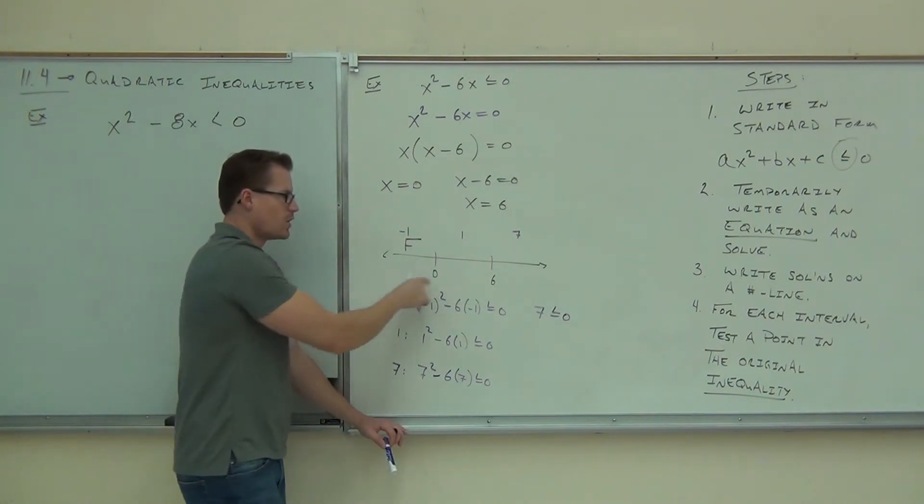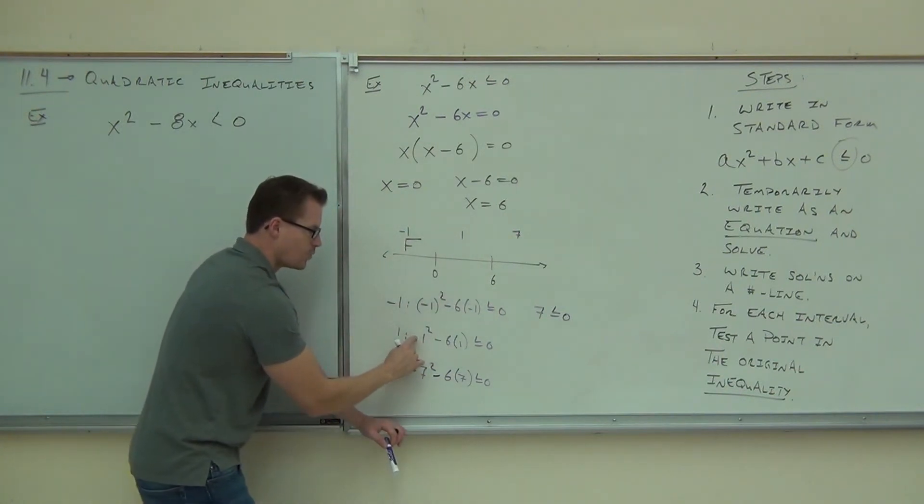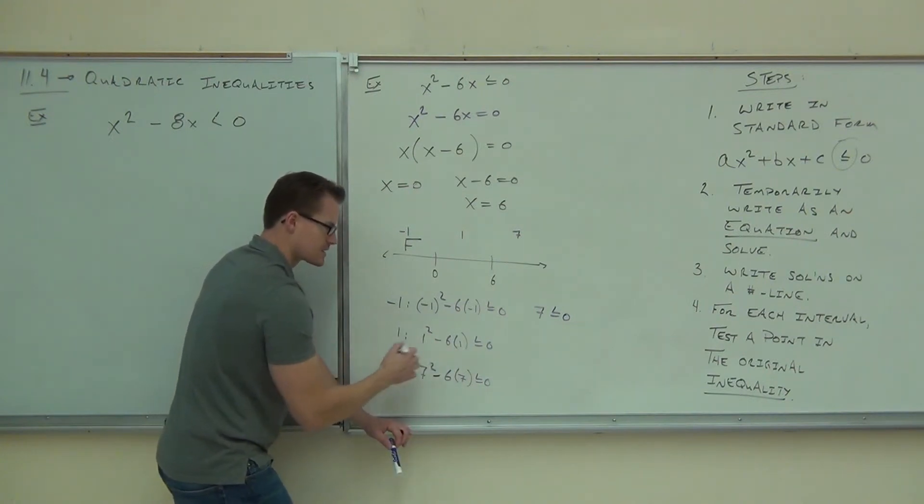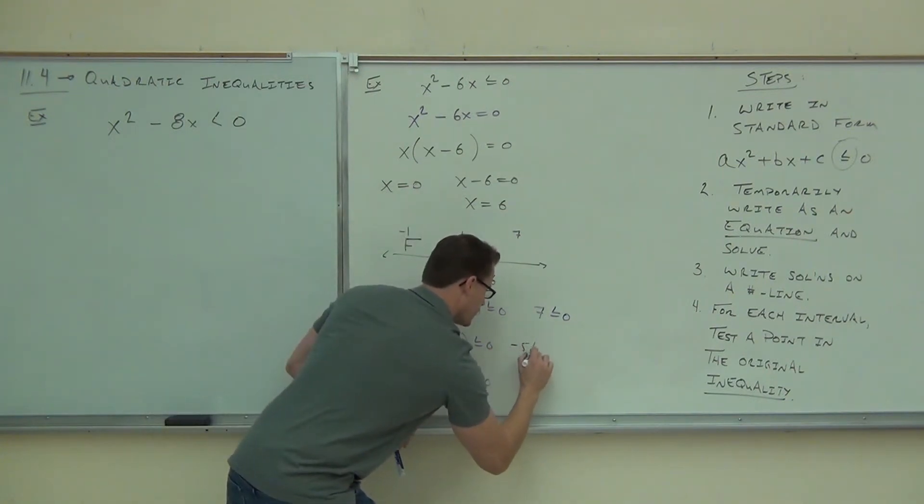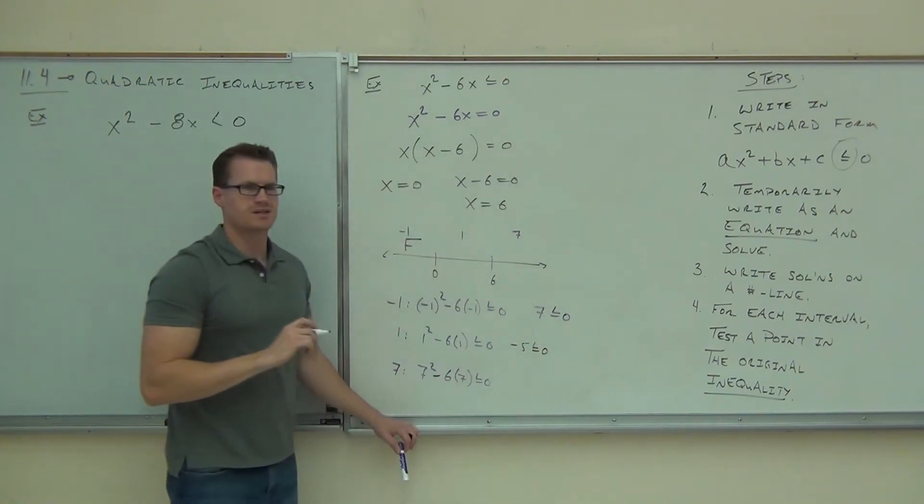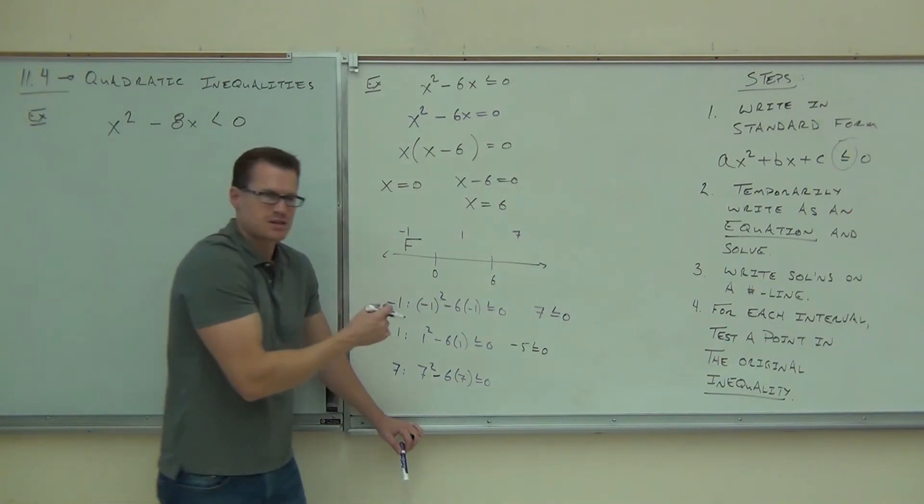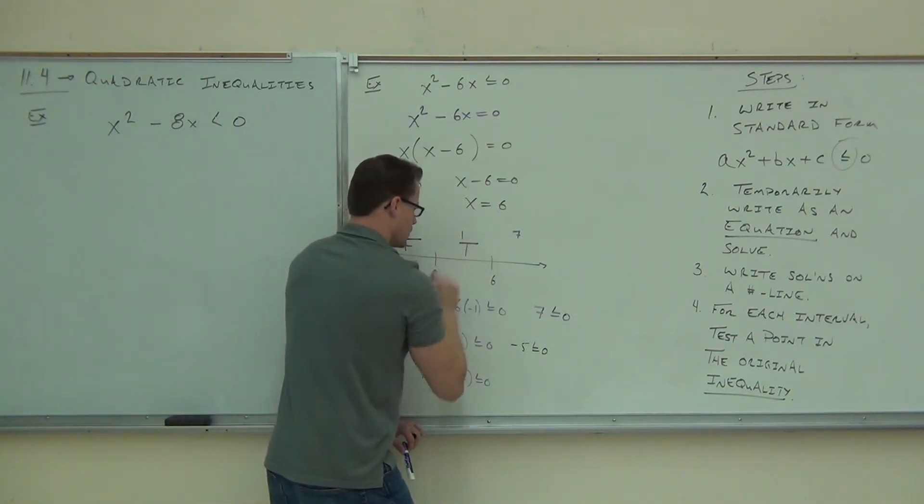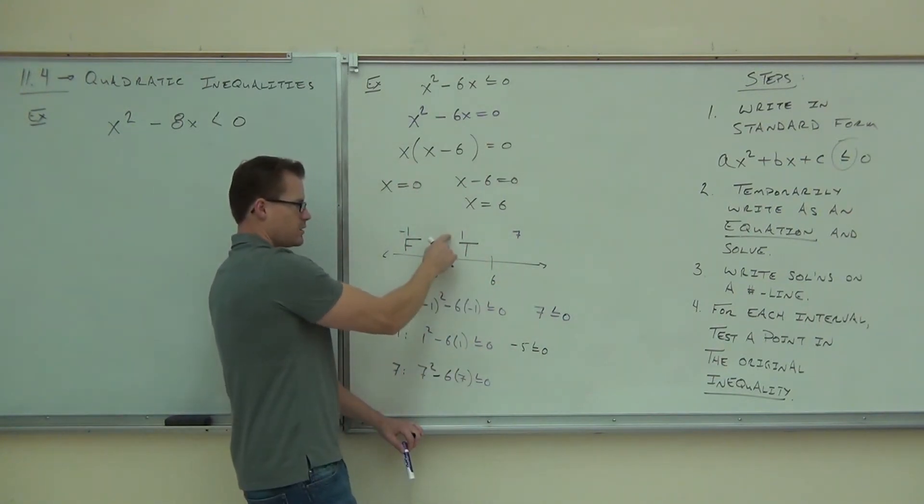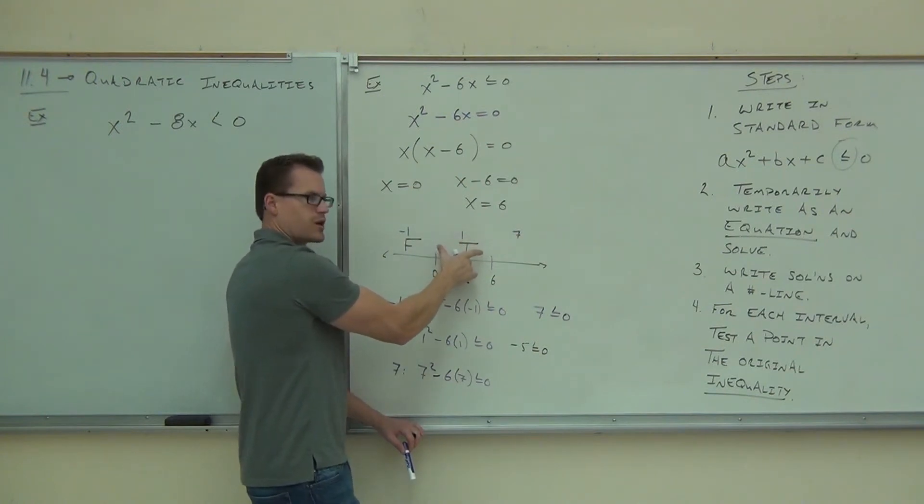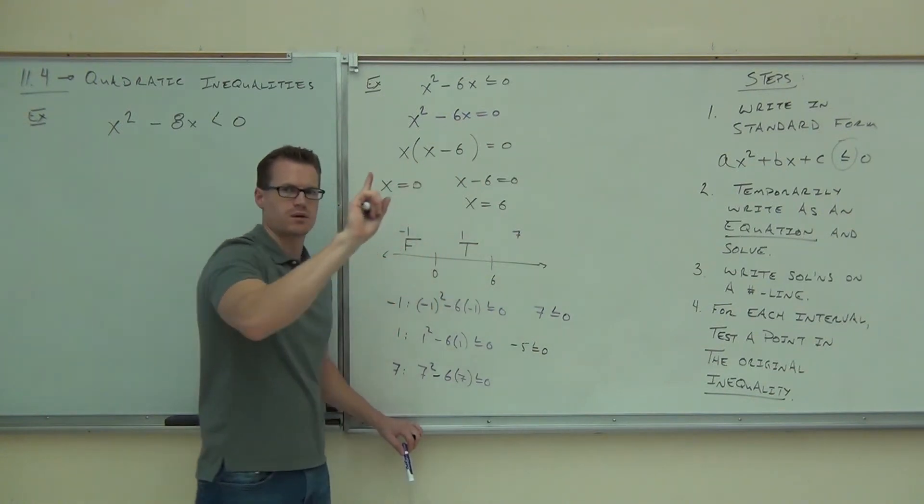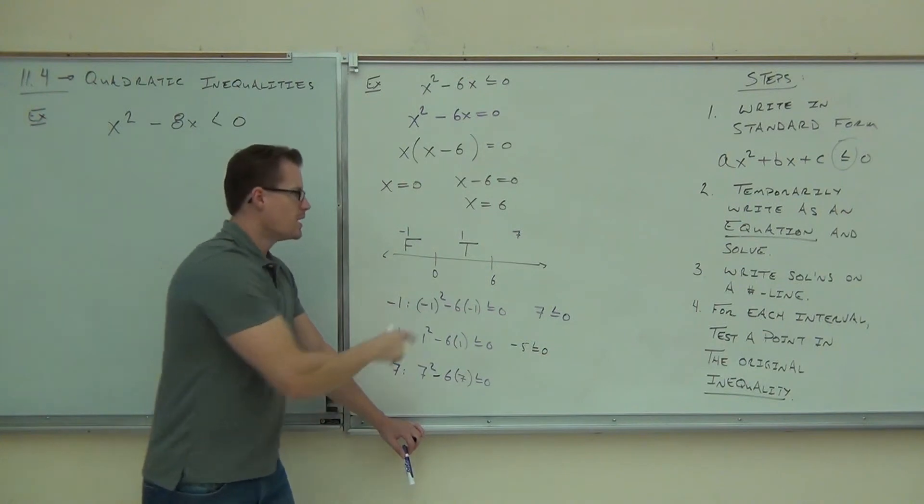Okay, next interval, we're going to plug in 1. 1 says 1 squared, that's 1, minus 6, that's negative 5, is less than or equal to 0. Is negative 5 less than or equal to 0? Yes. Absolutely. It's less than 0. That makes it true. So I checked 1, it was true. I'm going to put true for that whole interval. You only need to check one point, not a whole bunch of them, just one point.